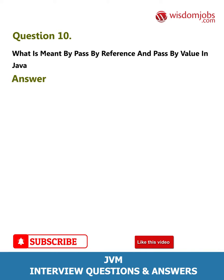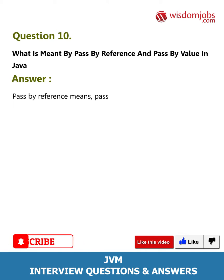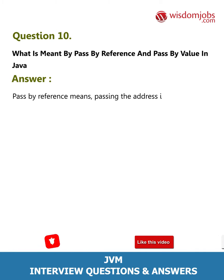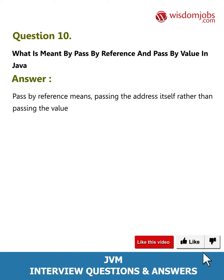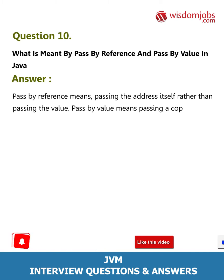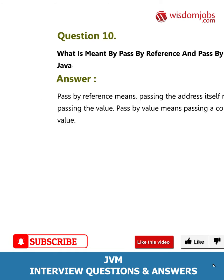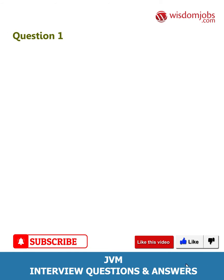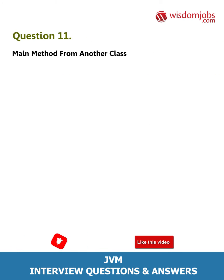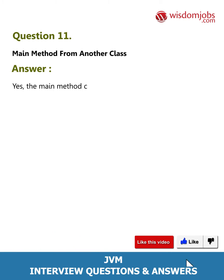Question 10: What is meant by pass by reference and pass by value in Java? Answer: Pass by reference means passing the address itself rather than passing the value. Pass by value means passing a copy of the value.